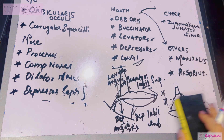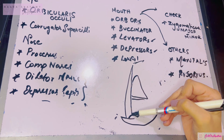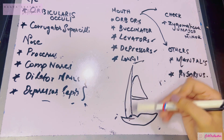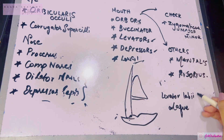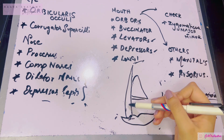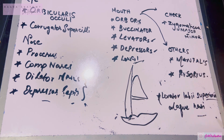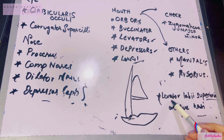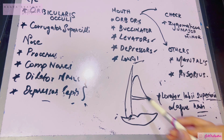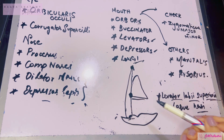The long muscle — the levator labii superioris alaeque nasi — is both long in length and long in name. Since it involves the lip and the nose, it carries out actions for both. It elevates the lip, lies superior to the lip, and also dilates the nasal aperture by crossing the nose. Its origin is from the frontal process of the maxilla, and it inserts into the nasal cartilage and the upper lip.